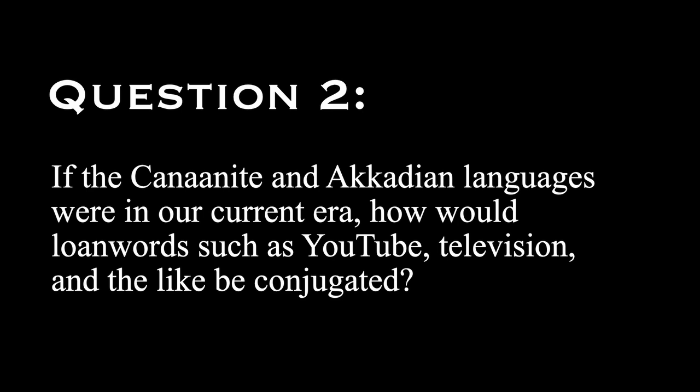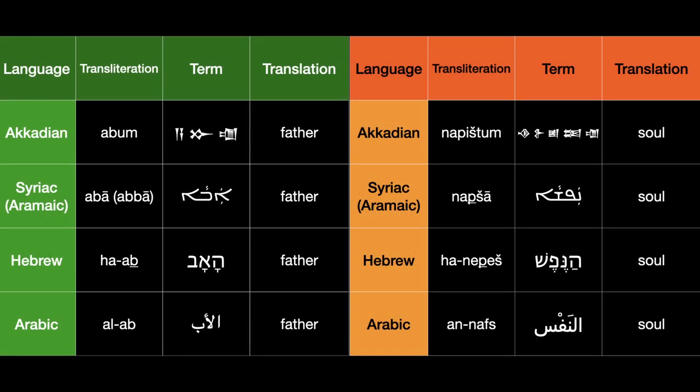For Akkadian, we'll just look at what's going on there. I've taken a couple of words that are common to Semitic languages — Akkadian, Syriac or Aramaic, Hebrew, and Arabic — and we'll look at these as our exemplars. We've got 'father' and 'soul,' right? So 'abum' and 'napishtum' in Akkadian.